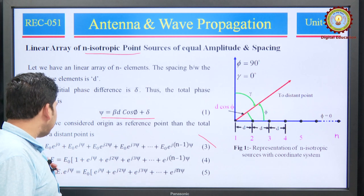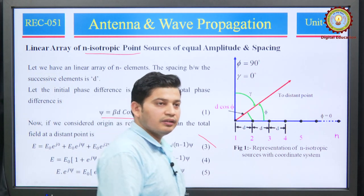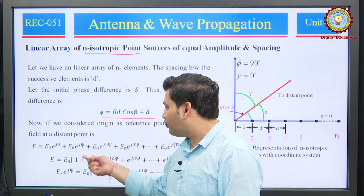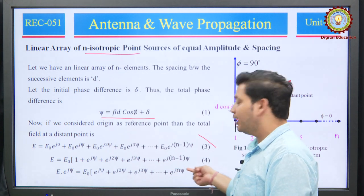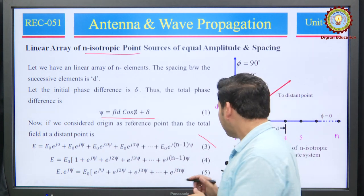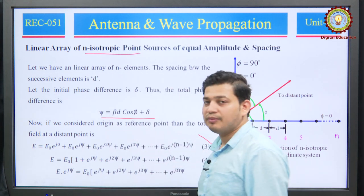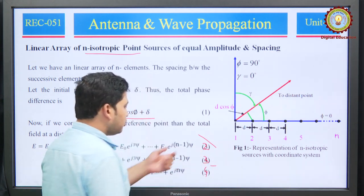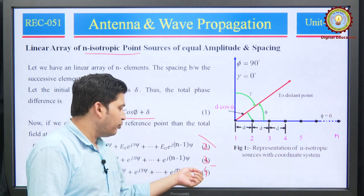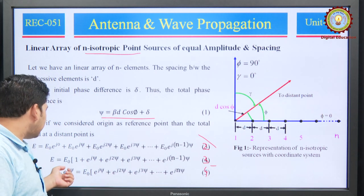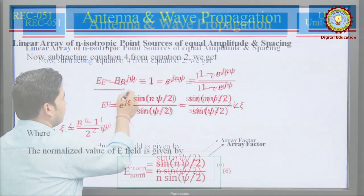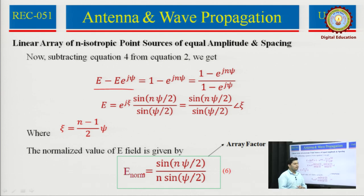Next, we multiply both sides by e^(j*psi). When you multiply by e^(j*psi), each term shifts: e^(j*psi), e^(j*2*psi), e^(j*3*psi), e^(j*4*psi) ... e^(j*n*psi). Then we subtract equation 3 and equation 4. When you subtract, you obtain: E*(1 - e^(j*psi)) = 1 - e^(j*n*psi), and so we obtain this value.